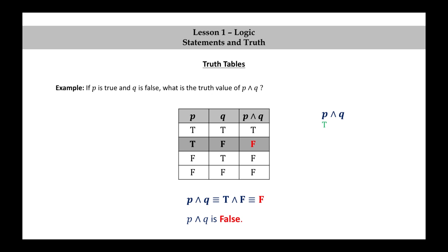We can see this symbolically by putting the truth values of the propositional variables under each propositional variable. So under P we'll put T for true, under Q we'll put false, and the result is that the conjunction is false.